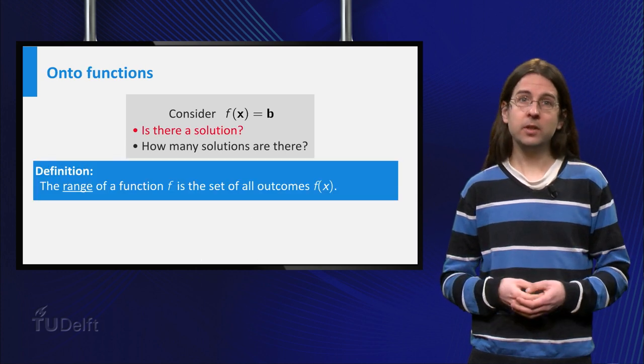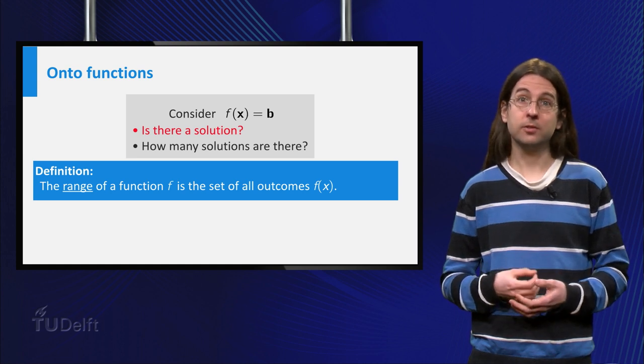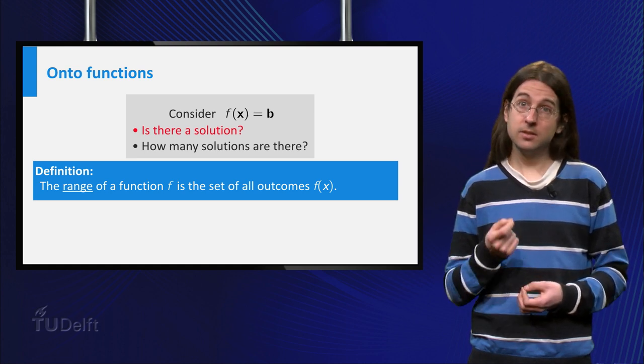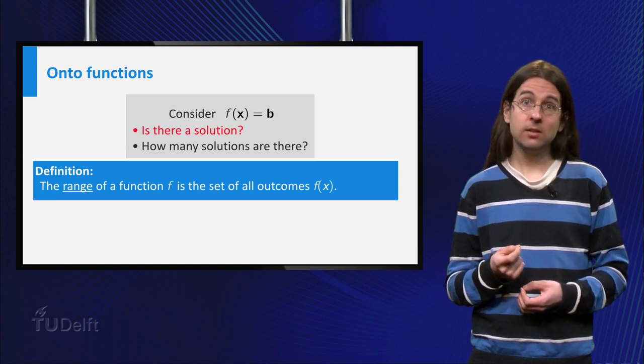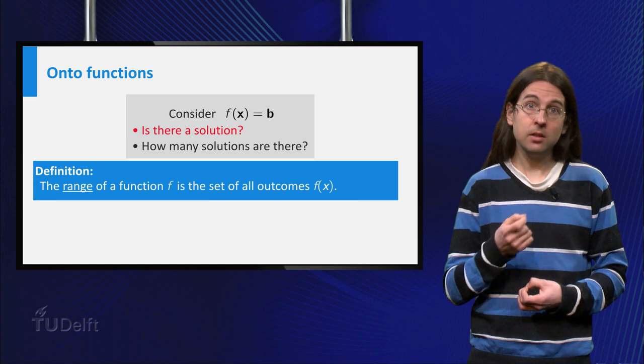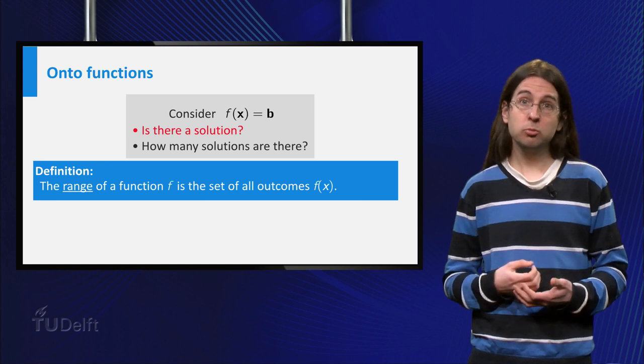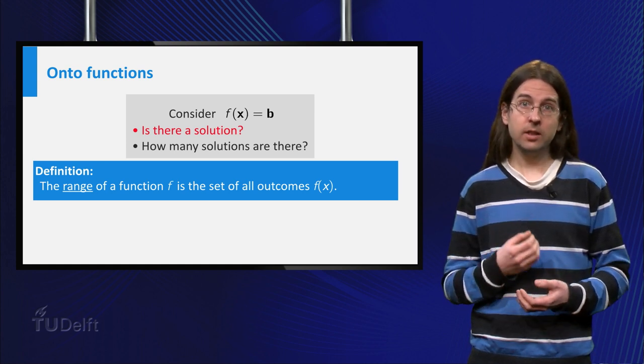The range of a function is the set of all possible outcomes of that function. This is a subset of the codomain. And as we just saw, it does not have to be the entire codomain. (-1, 3, 2) was not in the range of f.